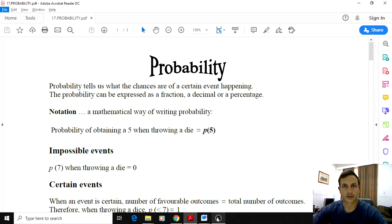So let's get cracking. Probability tells us the chances of a certain event happening, so the probability that something is going to take place. And that can be expressed as a fraction, decimal, or percentage. For us, we prefer it to be represented as a common fraction most of the time, but if it's a decimal or percentage that is also okay.